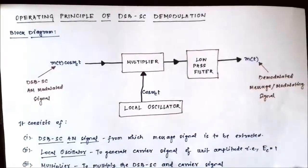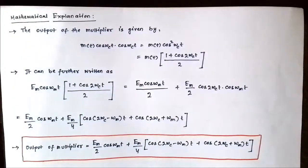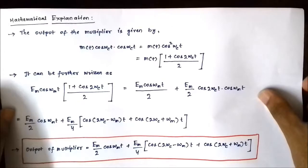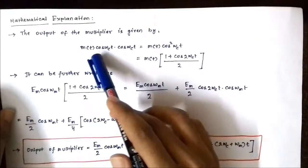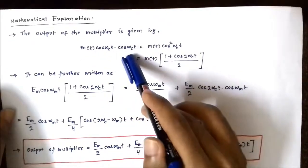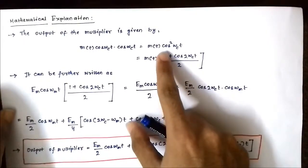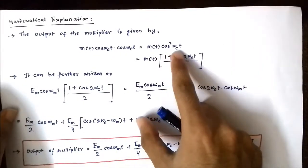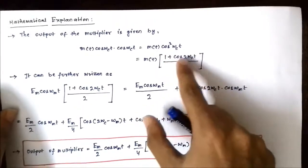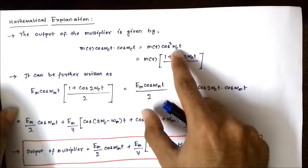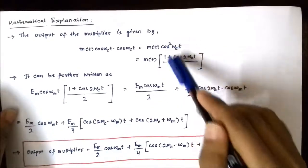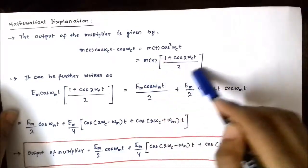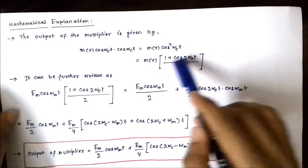Next we discuss the mathematical analysis. The output of the multiplier, to which the DSBSC signal and the carrier signal of unit amplitude are fed, is given by m(t)·cos(ωct) multiplied by cos(ωct), which equals m(t)·cos²(ωct). We use the trigonometric identity: cos²(a) = (1 + cos(2a)) / 2, where I am writing ωct as a.